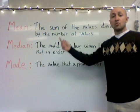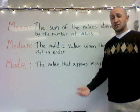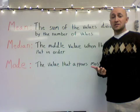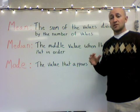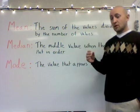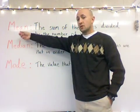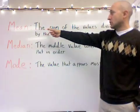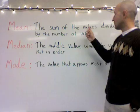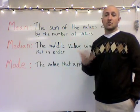Today we'll be looking at something called the mean, median, and mode. This is part of statistics where we're given data, and we have to do three steps. We're going to take our data, put it in order, find the mean — which means the sum of the values divided by the number of values.